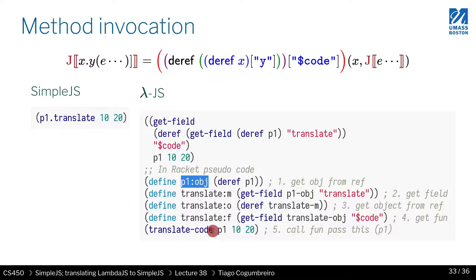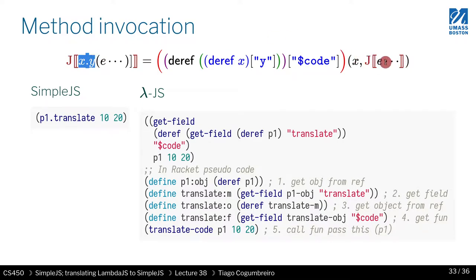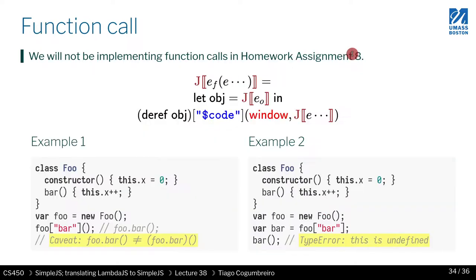There are two typos here which will be fixed. You want to pass x (which is this x), and finally you want to translate the parameters.